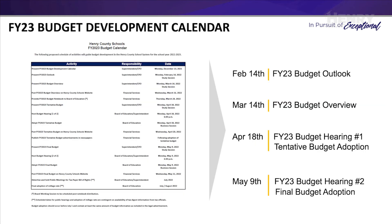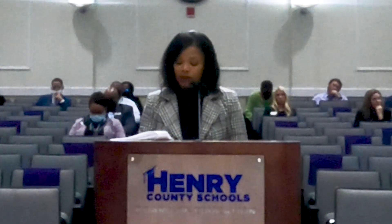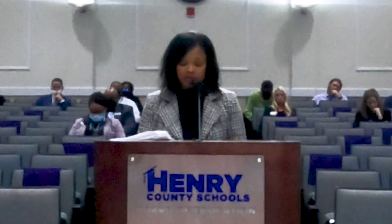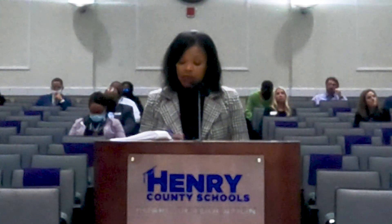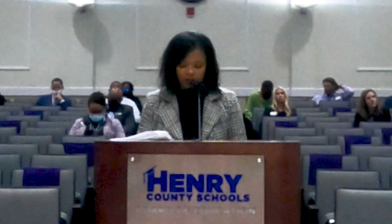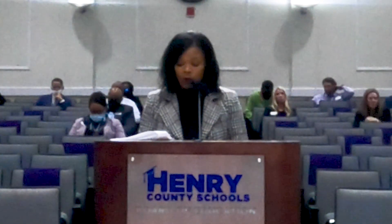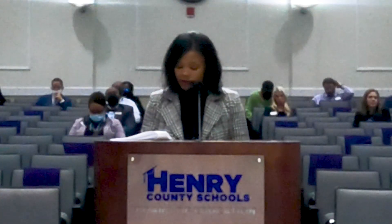With an understanding of those key inputs and timing, I will now present the FY23 budget development calendar, which will be available in the board meeting attachments. The state legislative session will run January to early April. I will provide reports in February and March to update the board on the economic outlook and budget forecasting impacts from the General Assembly. On April 18th, I will present the tentative budget and we will hold our first of two required budget hearings, after which the board will have the opportunity to adopt a tentative budget. On May 9th, I will present the second budget recommendation, hold the second budget hearing, and the board will have the opportunity to adopt the final proposed budget.